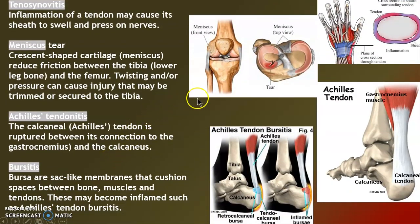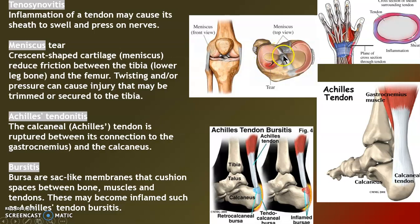Tenosynovitis is inflammation of the sheath around a tendon — sometimes from repetition or infection. Meniscus: this is a crescent-shaped cartilage. There's a pair of them under each femur on the cap of the tibia. Sometimes twisting and pressure — like a guy carrying someone on his back who turns around suddenly, or someone skiing and making a turn — that knee is not designed for shearing action.